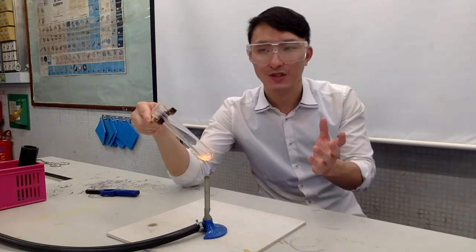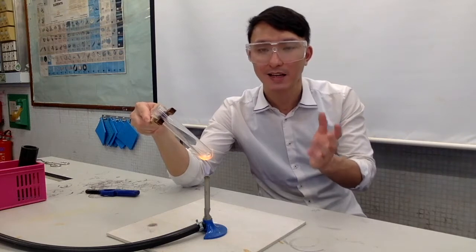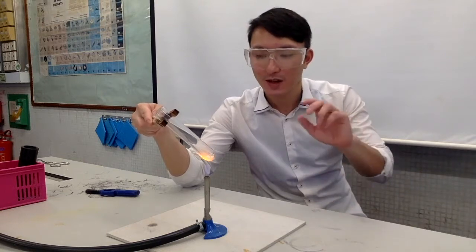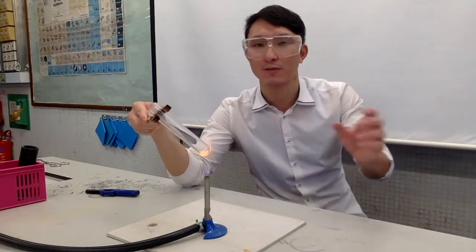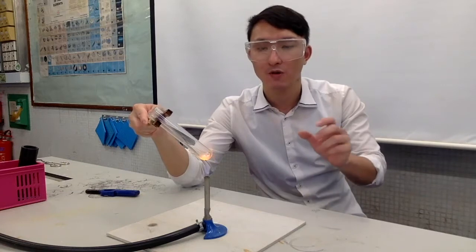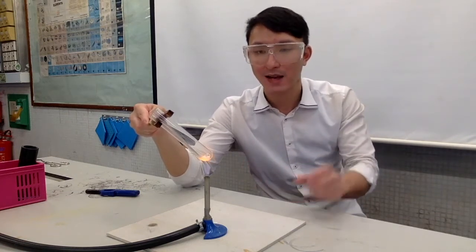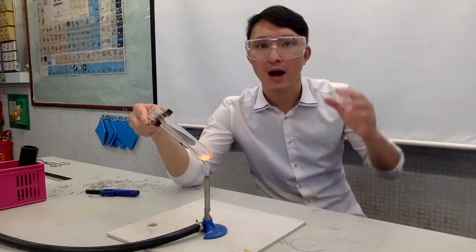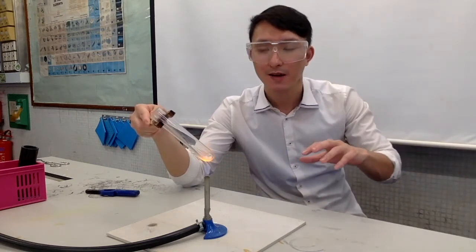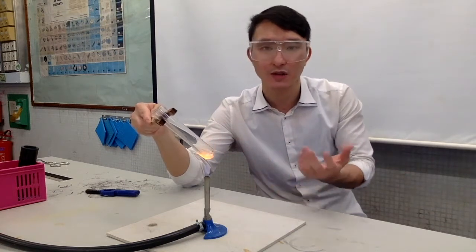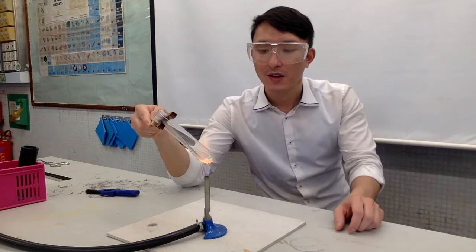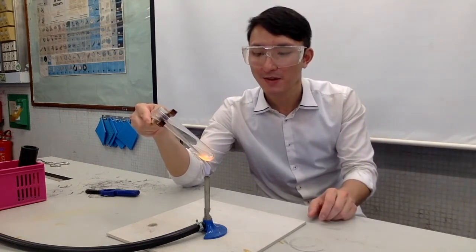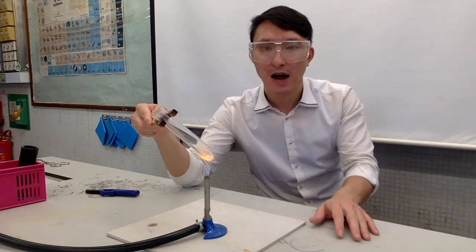Some students, when they see carbon dioxide or any gas being produced, may write 'colorless bubbles are given off.' Pay attention — when we talk about gas bubbles, we mean gas produced underwater. But there is no water here, so how could you see gas bubbles? Be more authentic when it comes to observations. Don't just memorize.